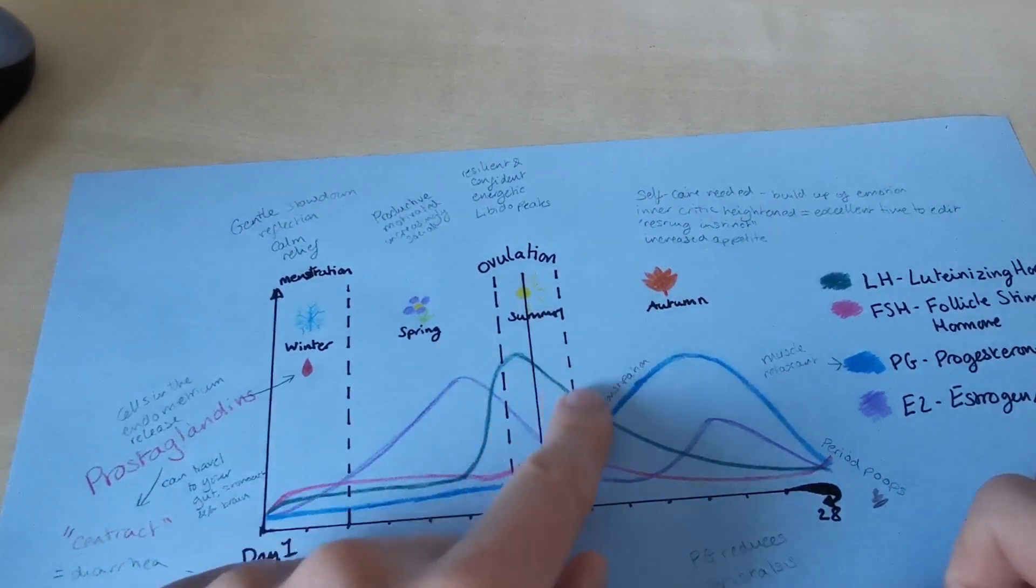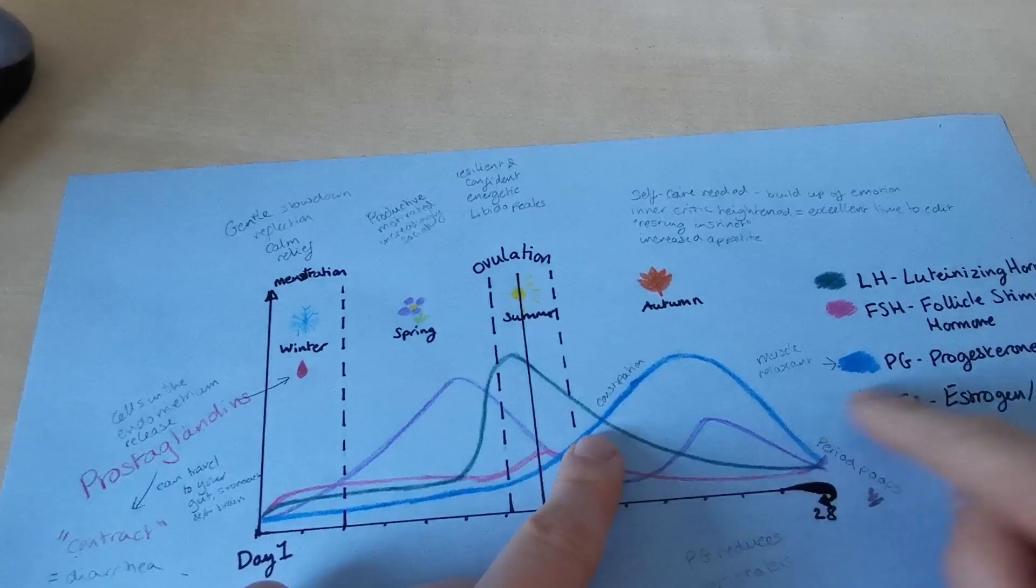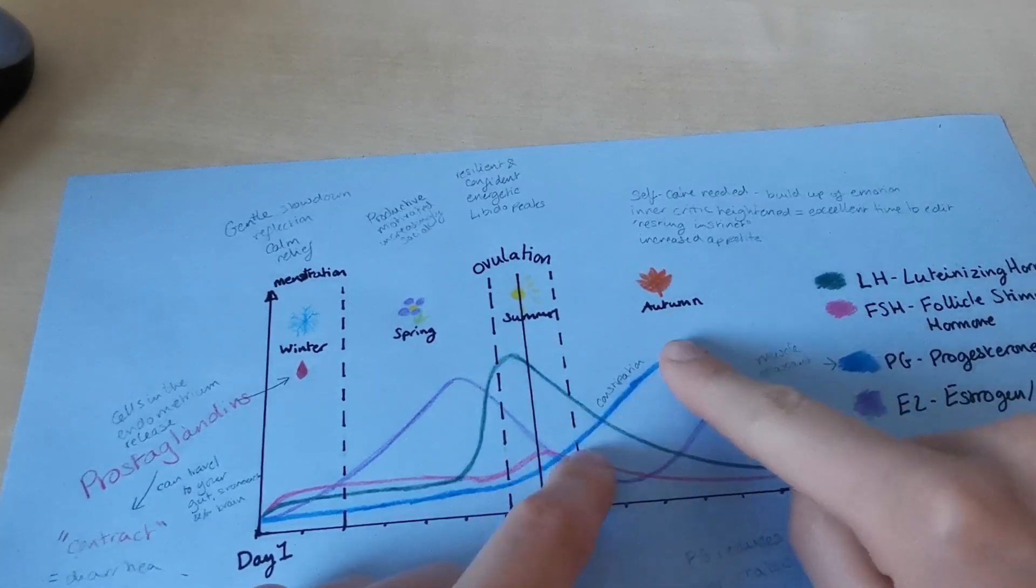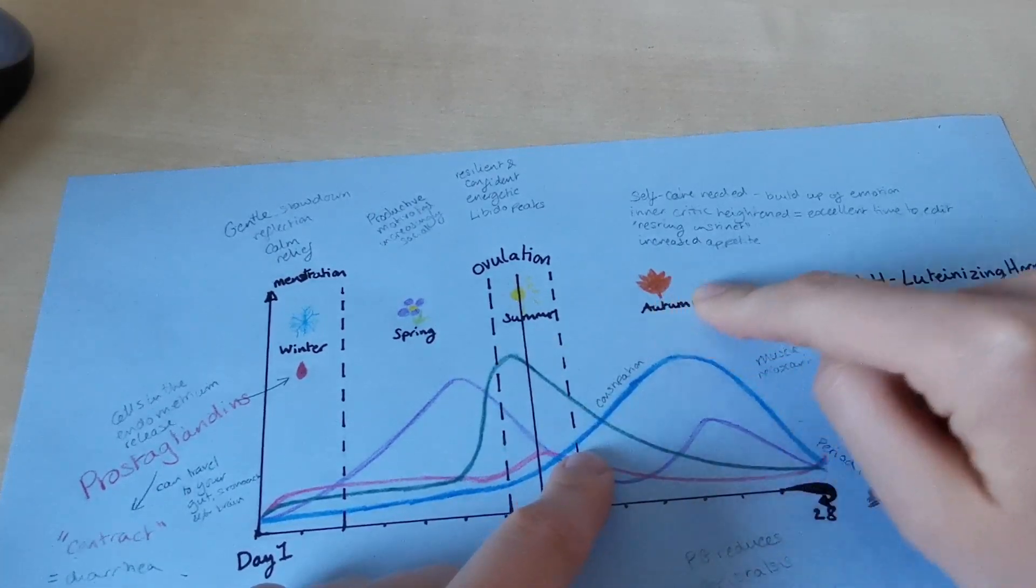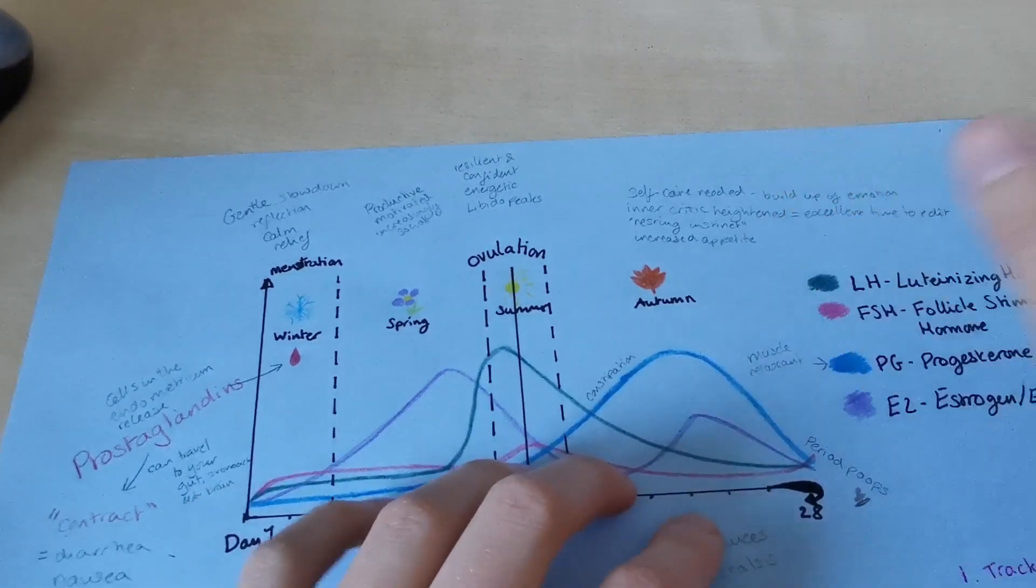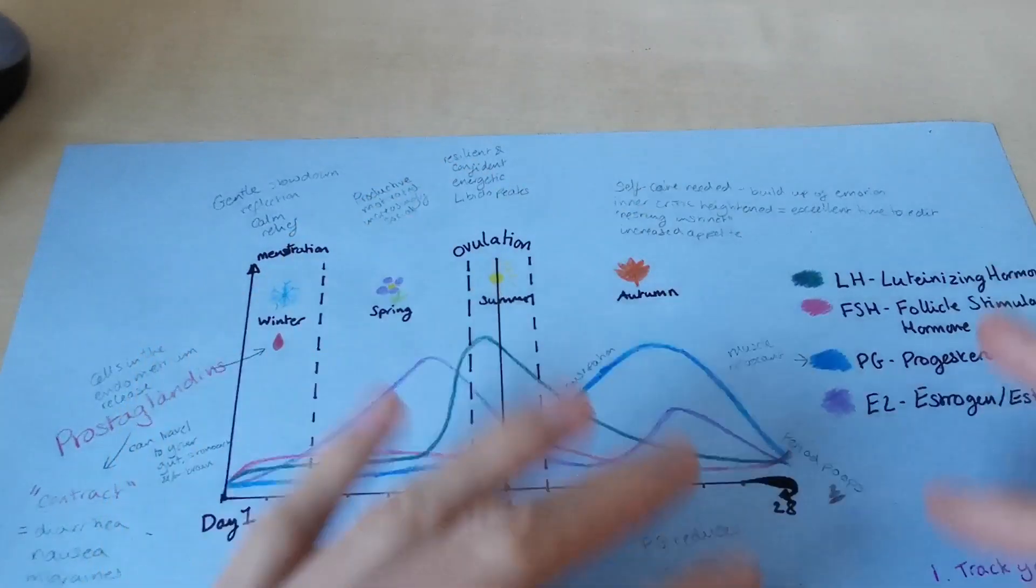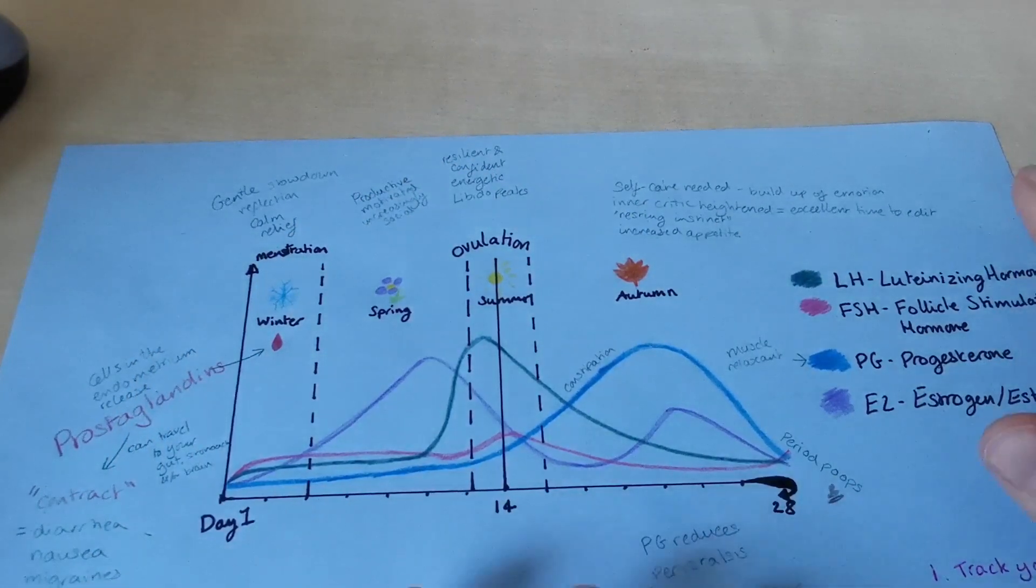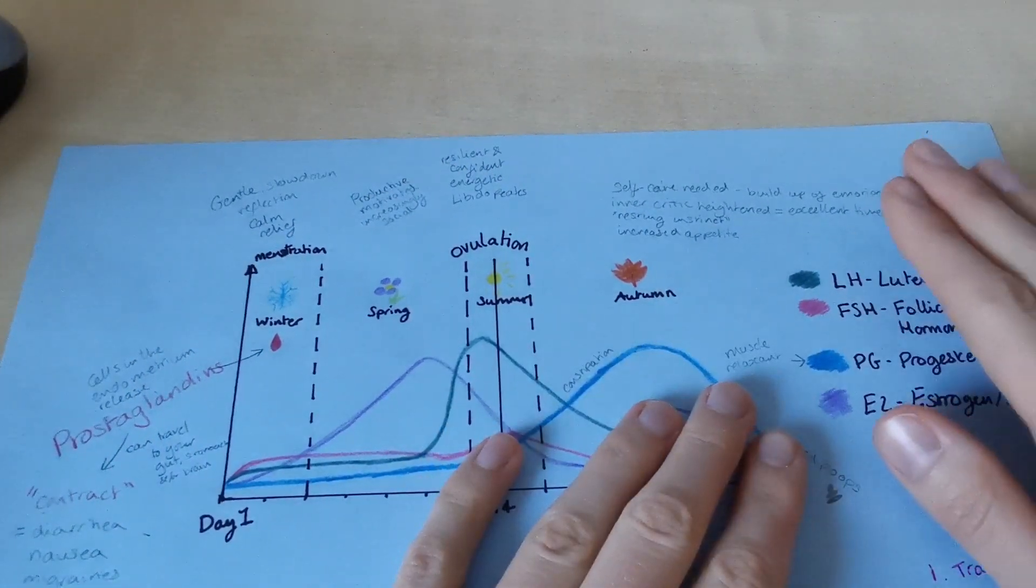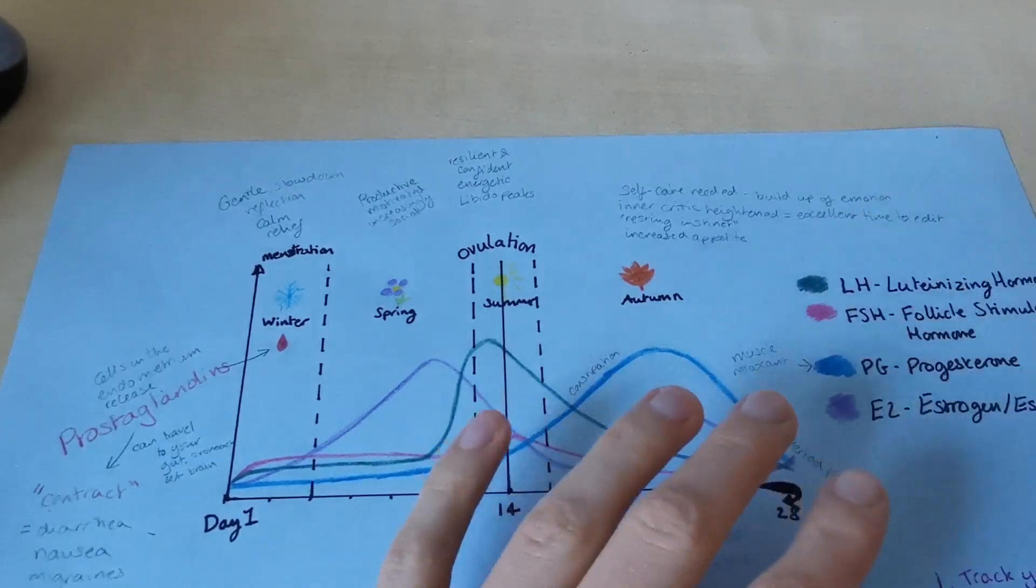So after that, your spring and summer, your progesterone starts to rise and your oestrogen falls. You become progesterone dominant and you move into your autumn where you're going to be a bit less energetic and you're going to feel a bit more of a need to retreat and be less social. So that's a really important time to take care of yourself and it's going to change how your period is.